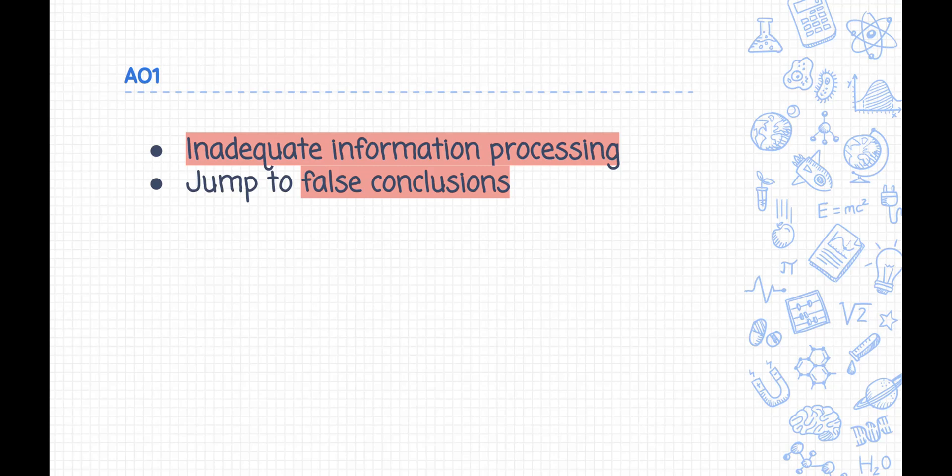and jump to conclusions about external events. This is known as egocentric bias. For example, thinking that the people presenting the news or radio are trying to send secret messages to them. Therefore, they relate irrelevant information to themselves and arrive at false conclusions, e.g., 'The people on the news are sending a secret message to me, which means the government knows about me and is out to get me.'